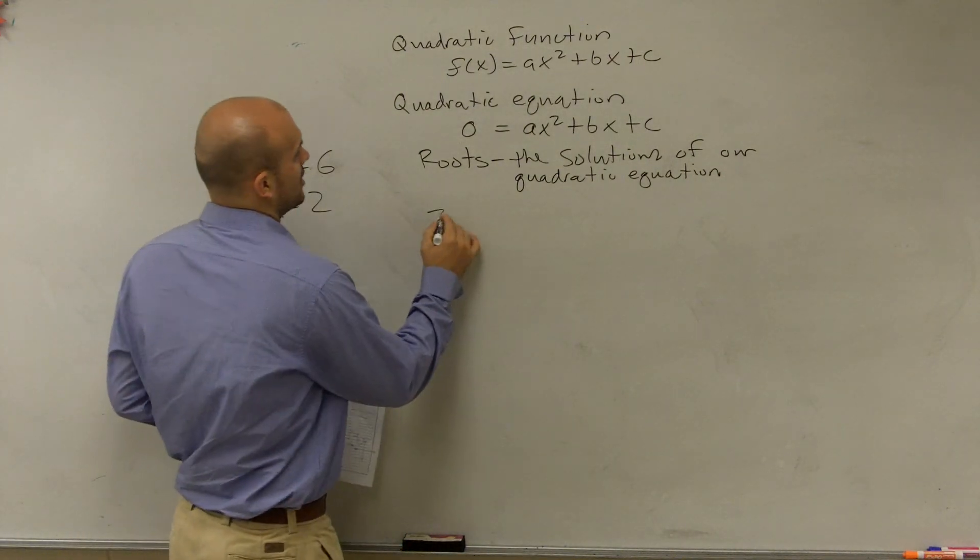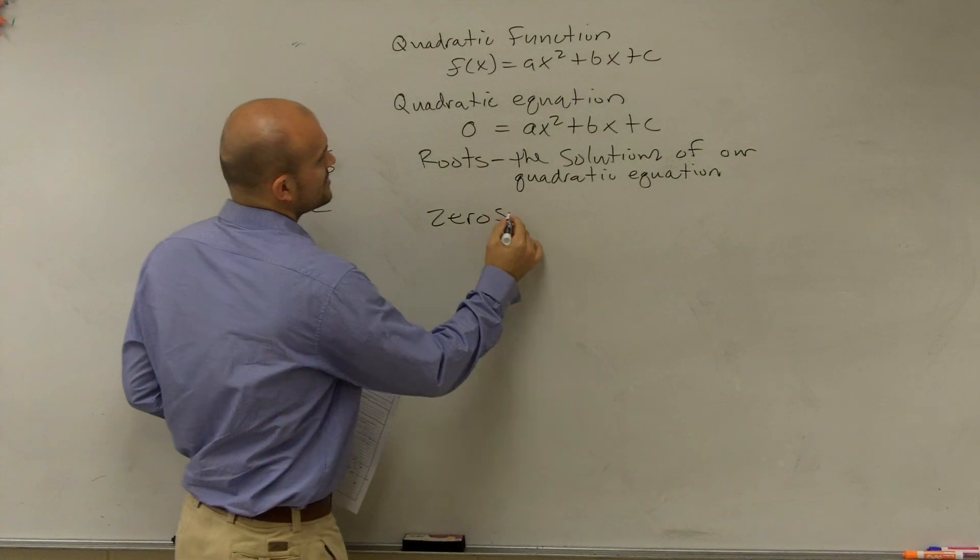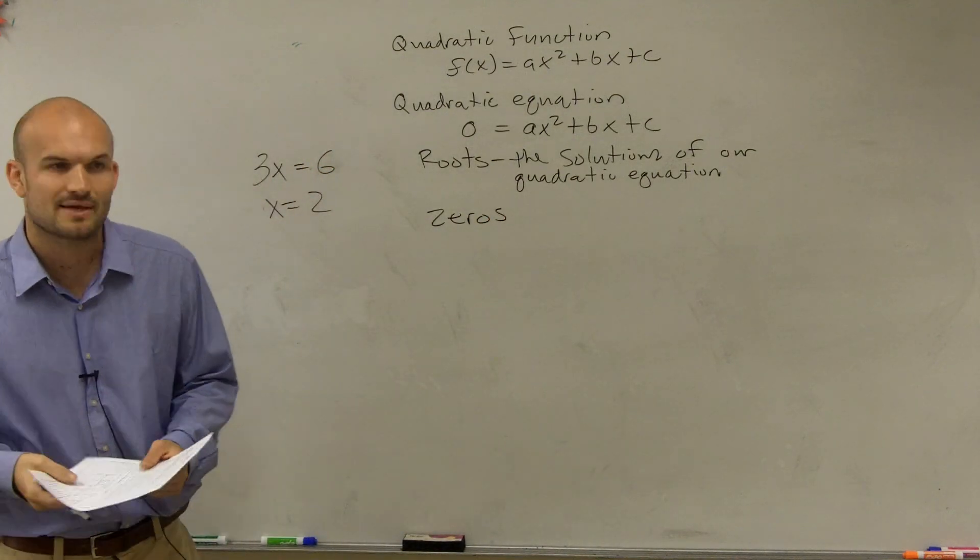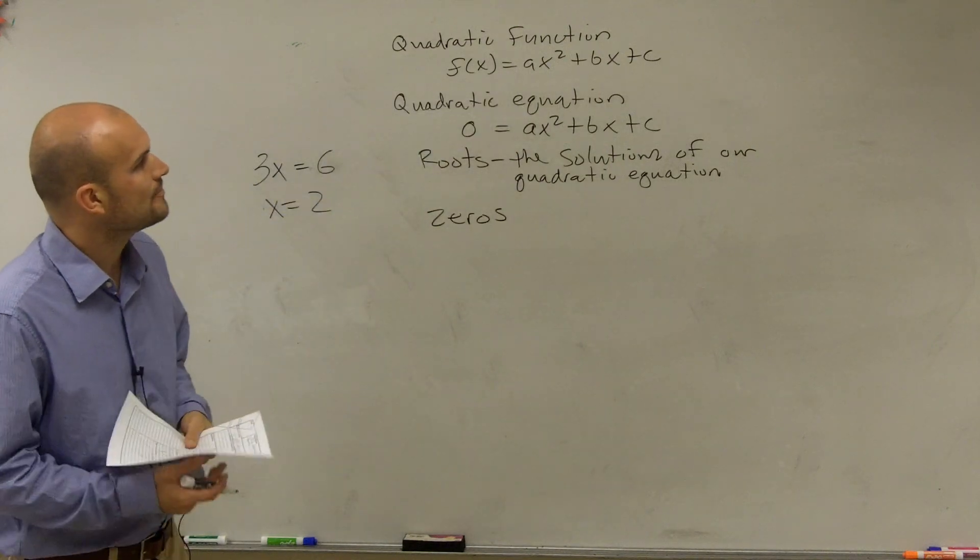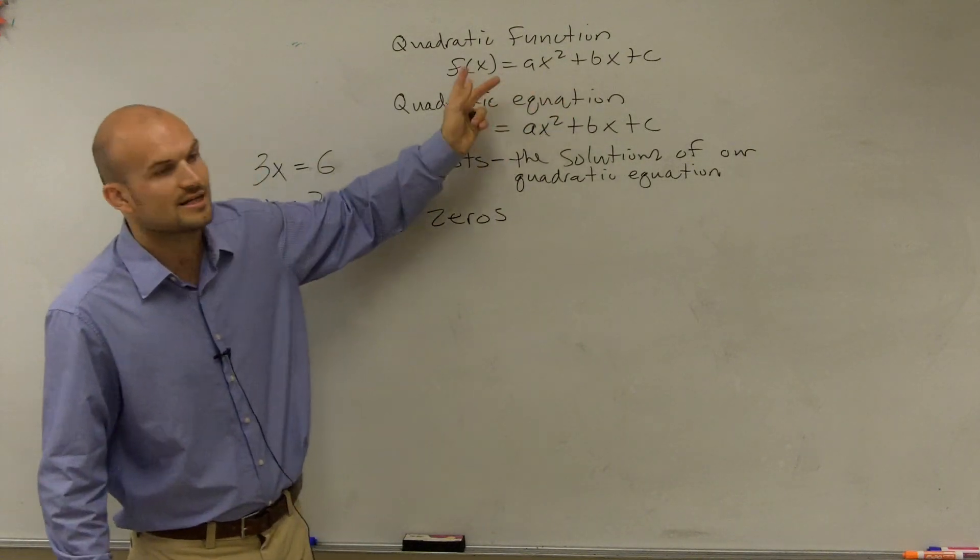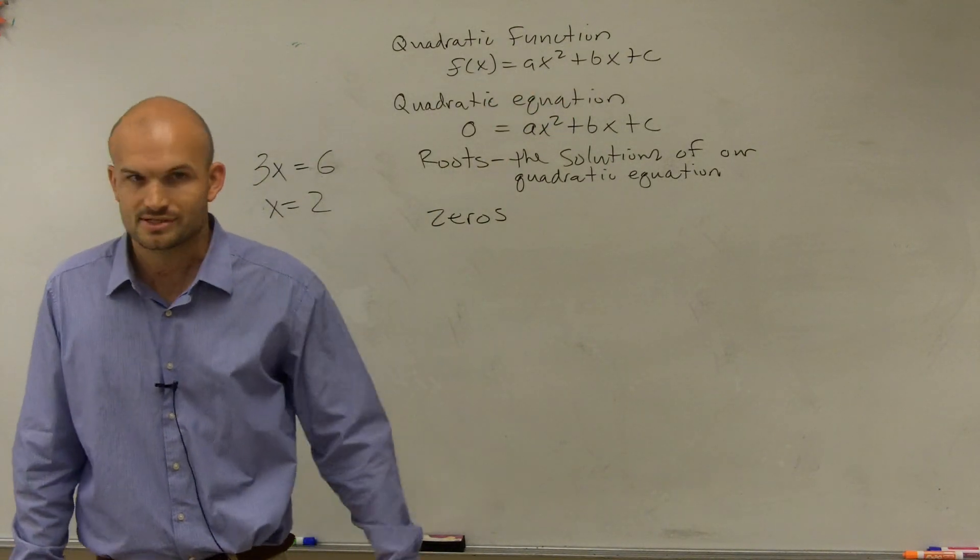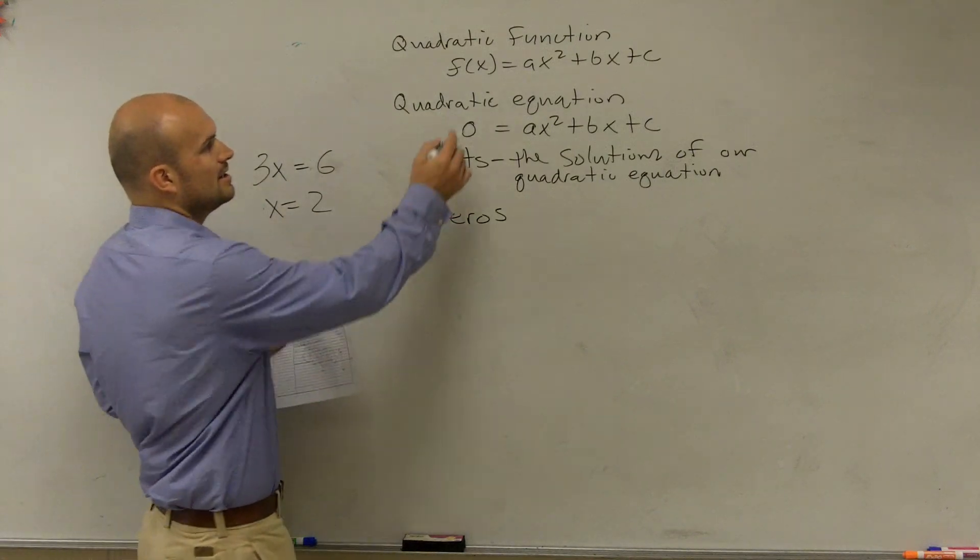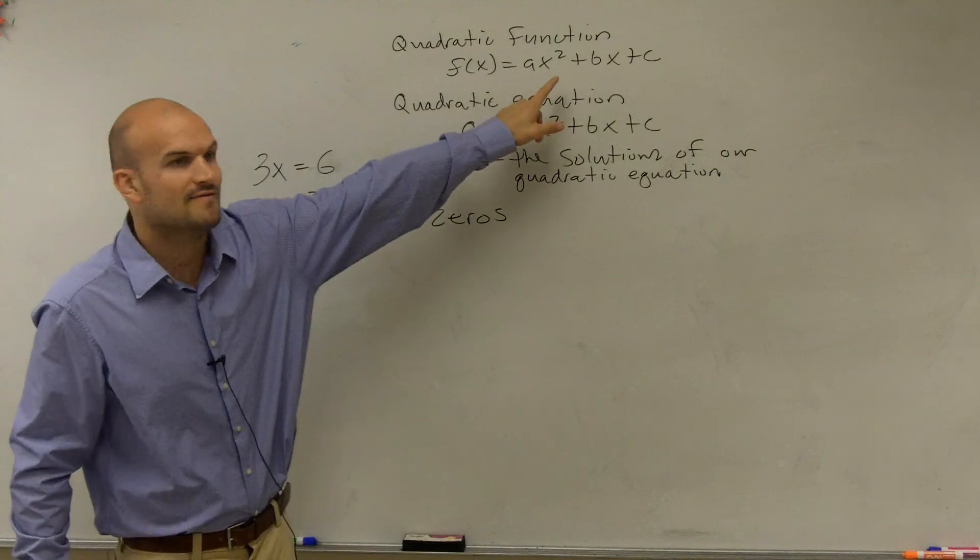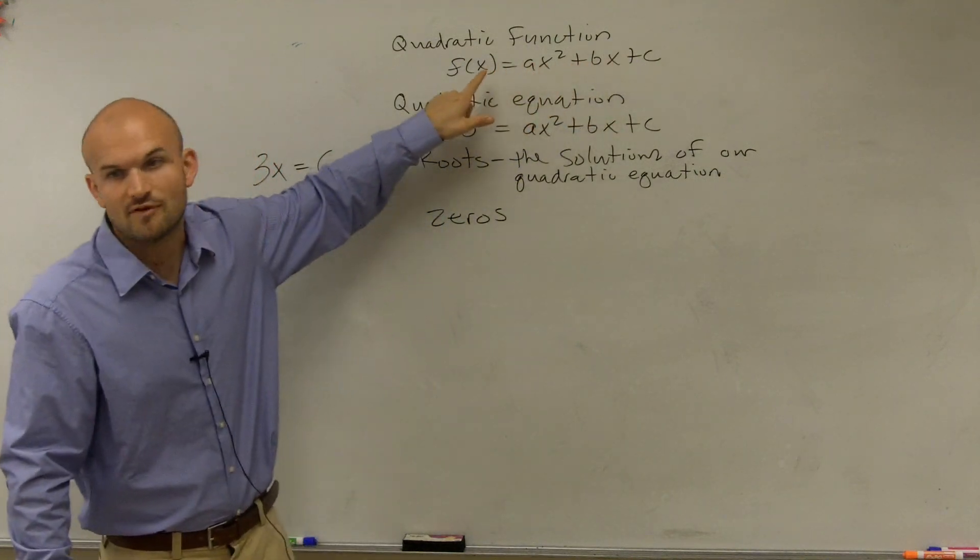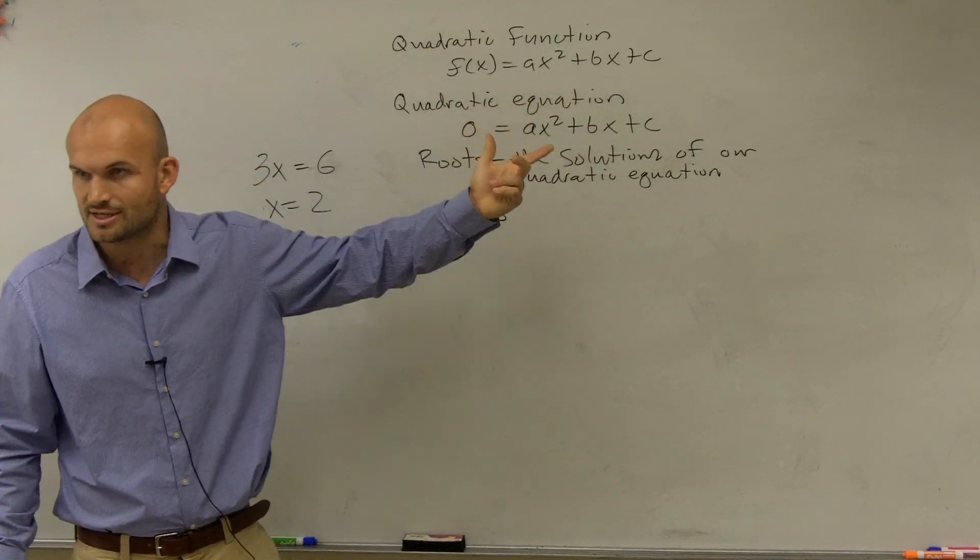Then, there's another one which we like to call, which is the zeros, which in reality is really kind of the same thing. And the zeros are just going to be the value of x that's going to make your quadratic function equal to 0. So, it's really the same thing, because if I want to figure out what my f(x), when that's equal to 0, the values of x that make my quadratic function equal to 0 is what we call the zeros.